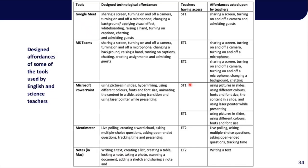The tools that teachers used were Google Meet, MS Teams, Microsoft PowerPoint, Mentimeter, and Notes in Mac. The design technological affordances are the ones listed next to these tools. The affordances that teachers acted upon include, for example, sharing a screen, turning on and off a camera. In the Mentimeter case: live polling, asking multiple choice questions, asking open-ended questions, tracking time, using pictures in slides, using different colors, fonts, and font size in the case of Microsoft PowerPoint — these are the technological affordances which they acted upon.